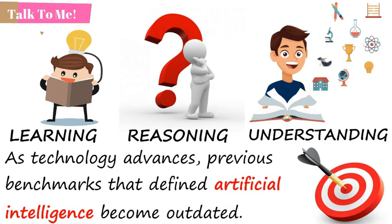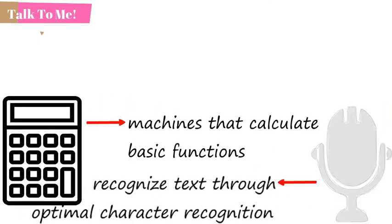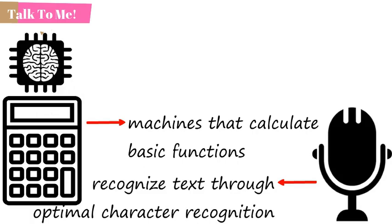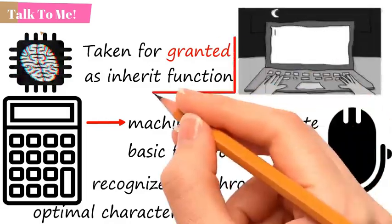For example, machines that calculate basic functions or recognize text through optical character recognition are no longer considered to embody artificial intelligence, since this function is now taken for granted as an inherent computer function.